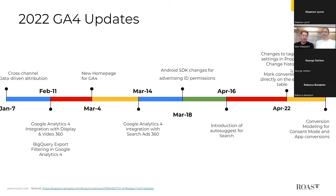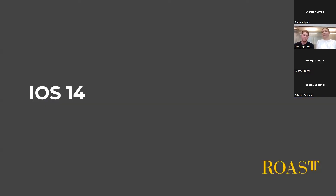April 22nd saw changes to tagging sessions in the property change history. On May 20th, GA4 introduced new types of conversion modeling for users implementing consent mode and for app users with Apple's App Tracking Transparency, where modeling will help fill gaps where observed data is unavailable.